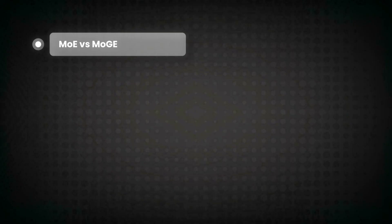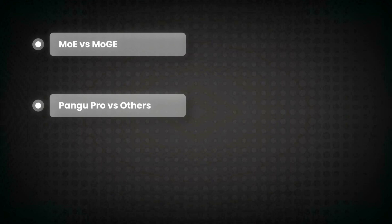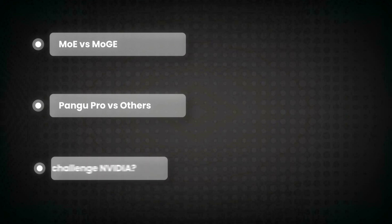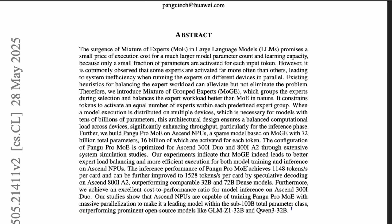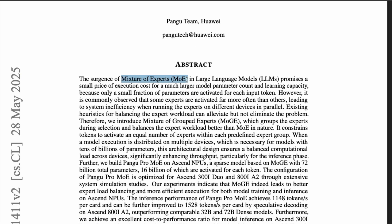We'll also see how this model compares with other large language models of similar size. Finally, we'll do a small commentary on whether this is going to challenge Nvidia in the way large language models are trained, because Nvidia is the GOAT right now — nobody is really challenging them except very small chip companies with smaller reach.